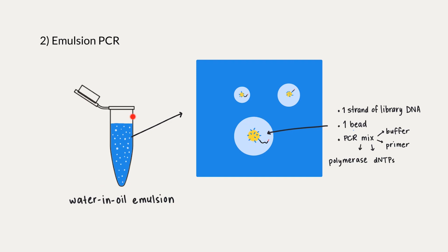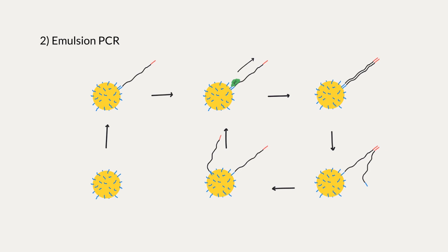All of these microvesicles floating around the mixture are simultaneously amplifying DNA, so we end up with millions and millions of copies. PCR makes a complementary strand of the DNA. So, in each microvesicle, we have a bead, and one fragment anneals to its complementary adapter site on the bead. The polymerase which was added to the PCR mix amplifies the strand from the bead, so that it creates another copy.